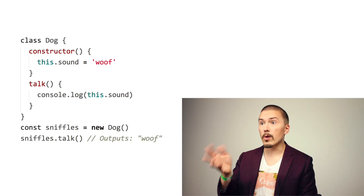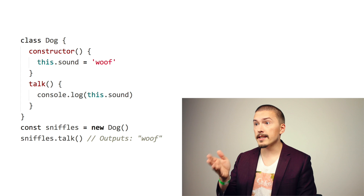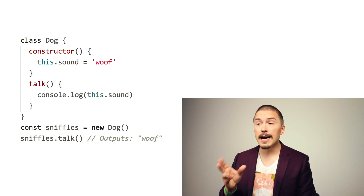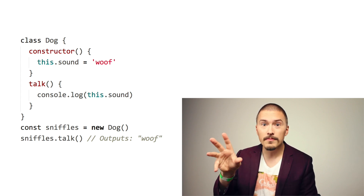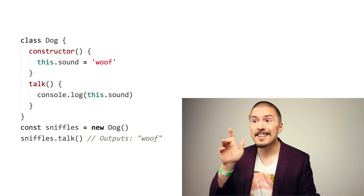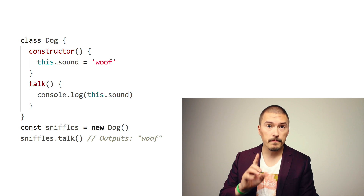Before I show you a factory function I want to show you a class. This is a dog class. It does some setup in the constructor, assigns a property to itself called sound. The class also has a method, talk, which uses that sound. We then instantiate a dog, sniffles, which we then call talk on, and sniffles promptly tells us woof! This is fine but there are a couple of annoying things with classes.